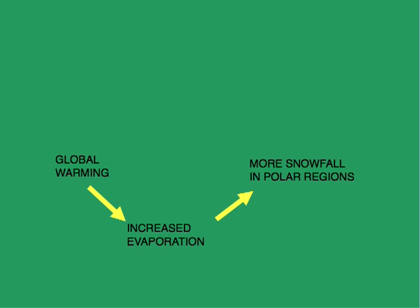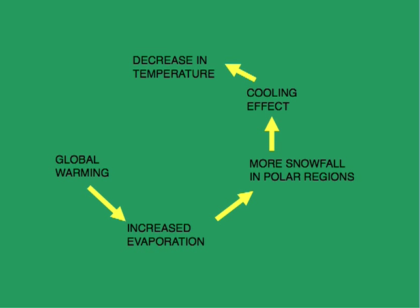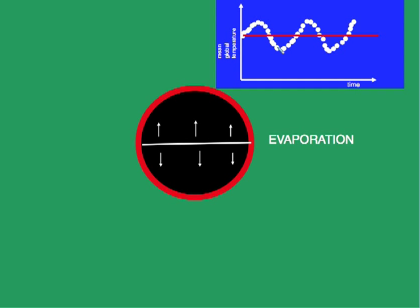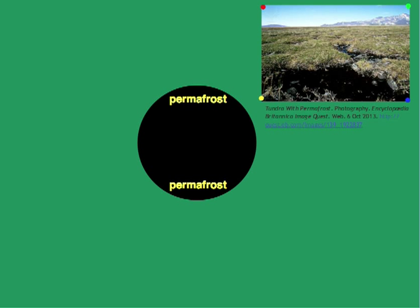That snowfall creates a cooling effect. The cooling effect brings a decrease in temperature, which reduces warming. But if warming is reduced, evaporation switches off, and when evaporation switches off, snowfall switches off and so does the cooling effect. This starts the cycle again, leading to an oscillation above and below the average temperature — a classic negative feedback loop.